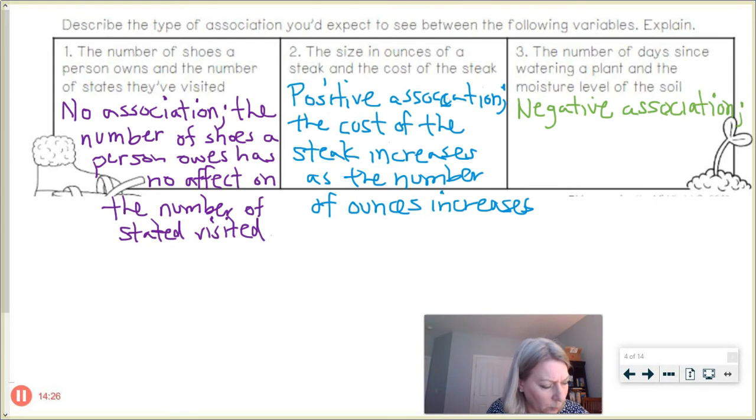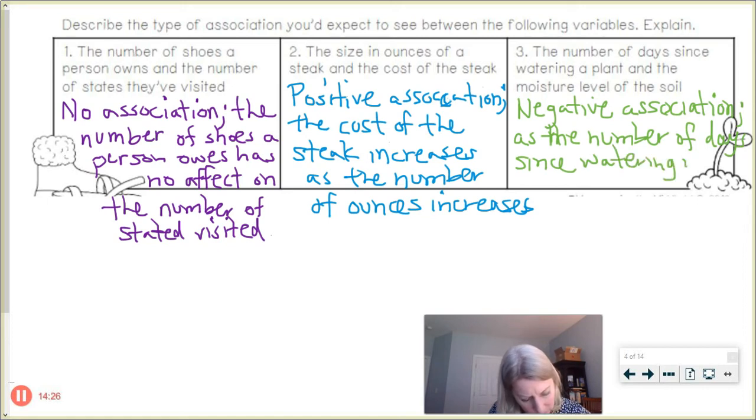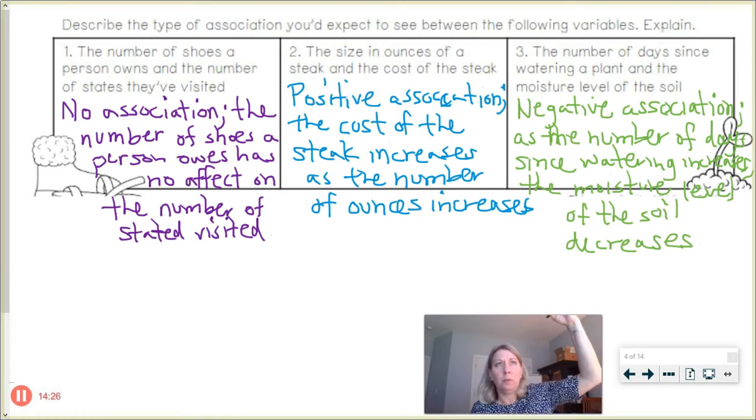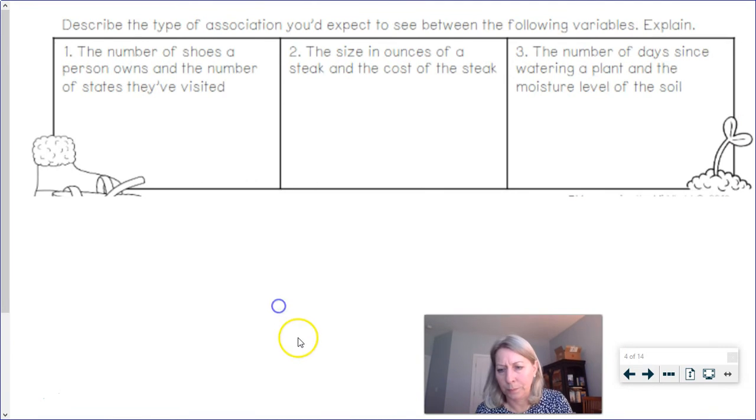And then after the semicolon I'm going to say, as the number of days, as the moisture in the soil since watering increases, the moisture level of the soil decreases. So one thing is going up and the other variable would be going downwards. So that would be one of those trends that looks like a downward sloping scatter plot graph.